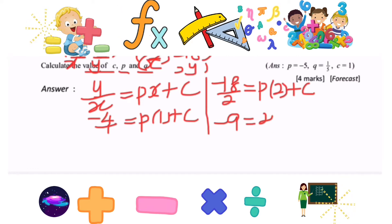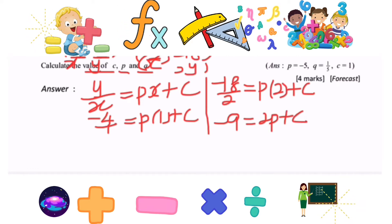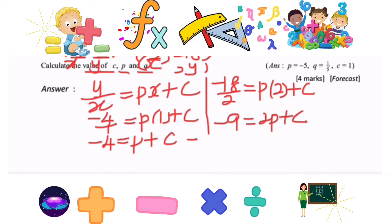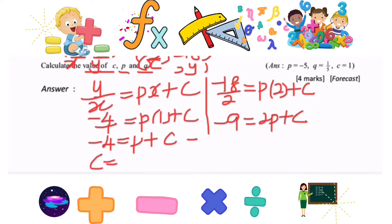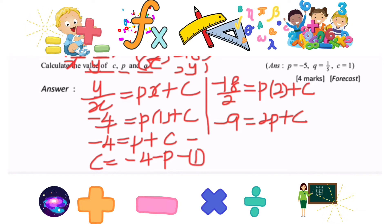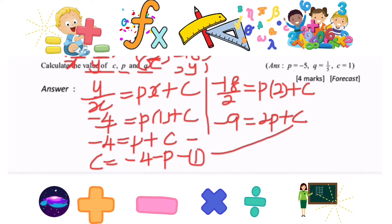Simplifying gives us two equations. We solve them simultaneously by expressing c in terms of p: c = -4 - p. We call this equation 1, and then substitute c into equation 2.